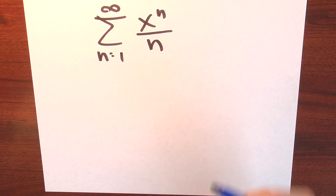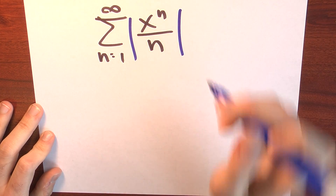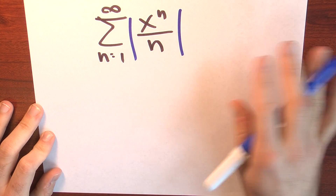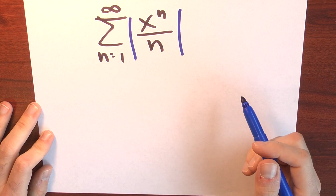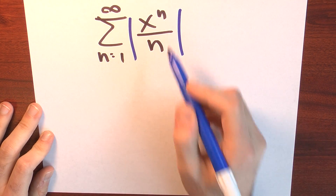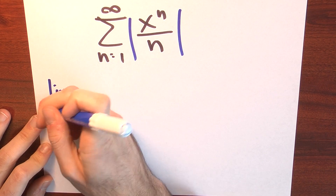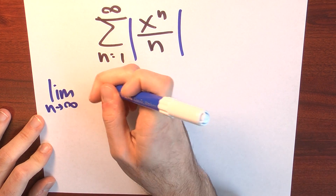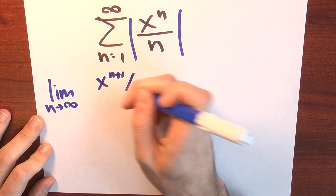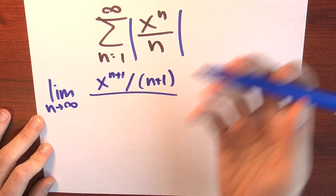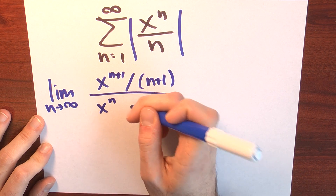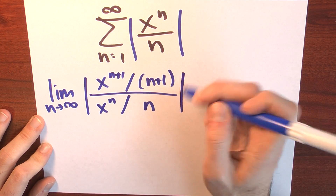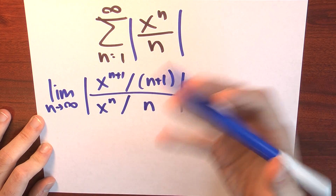Before we address that question, we can ask the easier question: what's its radius of convergence? I'll apply the ratio test and think about where this series converges absolutely. The ratio test tells me to look at the limit as n approaches infinity of the (n+1)st term, which is x to the n plus 1 over n plus 1, divided by the nth term, which is x to the n over n, all inside absolute value bars.